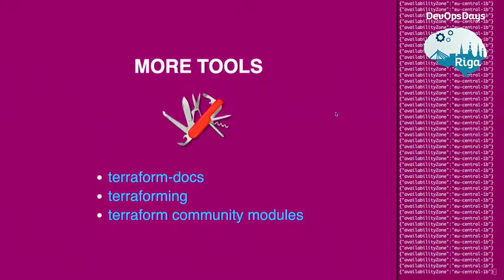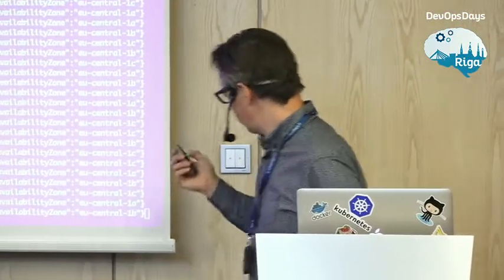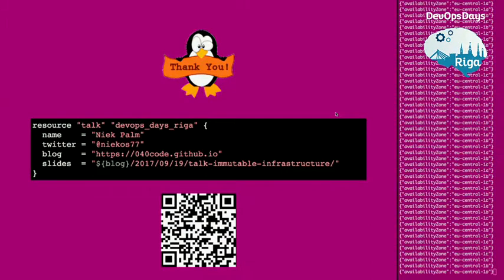The scaling worked — we can now see the service running in all availability zones. Some other handy tools to keep in mind: there's a simple tool that generates Markdown documentation of all parameters of your modules, giving a nice overview including defaults. Terraforming is a tool that helps you import existing infrastructure into Terraform including state. And there's a GitHub repository of Terraform community modules — very handy for VPCs to get started quickly. All the code, examples, slides, and references are on my blog. Thank you for your attention.